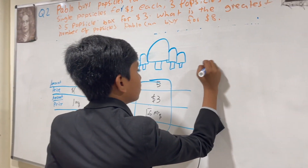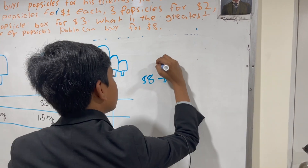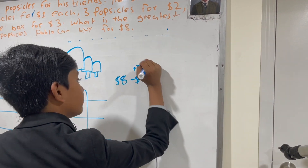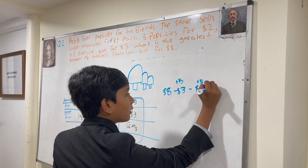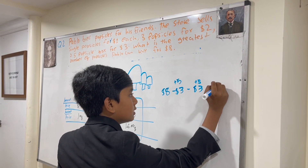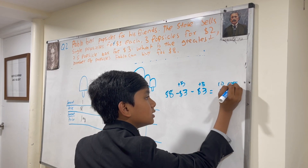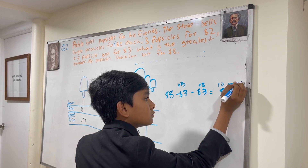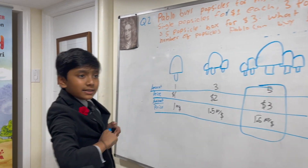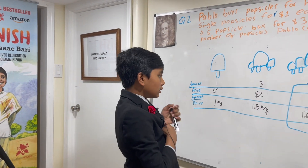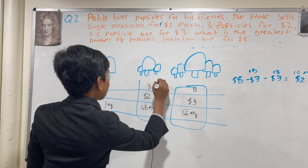We have eight dollars, minus three dollars which adds five popsicles, minus three more dollars which adds another five popsicles. That means you have two dollars left and ten popsicles. Now, with two dollars, the best deal you can buy is the three-popsicle pack.